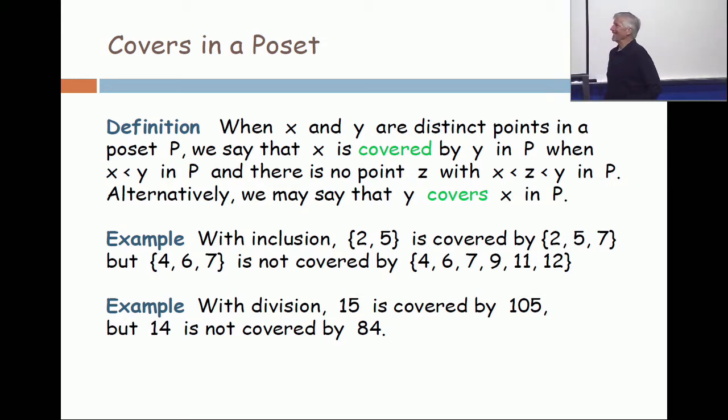(4,6,7) is less than (4,6,7,9,11,12) because it's a proper subset, but it's not covered by it because you can insert a set which contains (4,6,7) as a subset and is contained in (4,6,7,9,11,12).